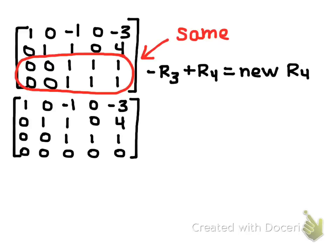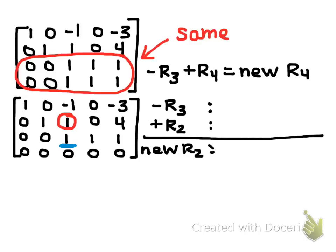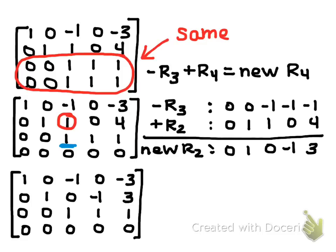So again, because I'm trying to do reduced row echelon form, I want to zero out the entries above the leading ones. So here's my leading 1 in row 3, and I want to zero out the 1 above it. So I'll do negative row 3 plus row 2 becomes the new row 2. So I negate everything in row 3. I write row 2 just as it is, add them together, and replace row 2 in my matrix.